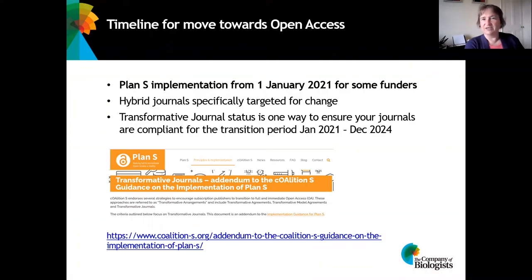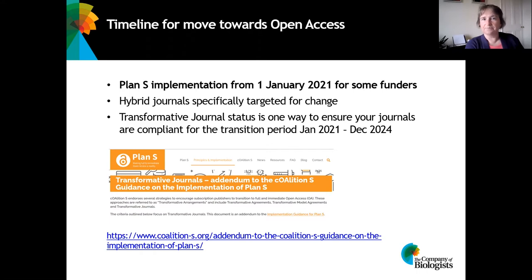Plan S is an open access initiative that came into play from the 1st of January 2021 for some Coalition S funders. Hybrid journals are specifically targeted for change, and transformative journal status is one way to ensure that your hybrid journals are compliant for your Plan S authors during the transition period January 2021 to December 2024. I thoroughly recommend looking at the Plan S website where there's more information about transformative journals, and the guidelines are updated from time to time.